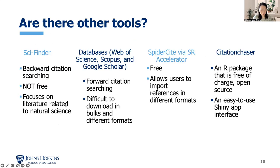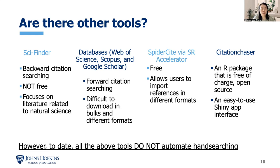The next question you may ask is: are there other tools we can use? The answer is yes, but they are limited. The first tool is called SignFinder, which enables backward citation searching. However, it is not free and it focuses on natural science literature. Databases such as Web of Science, Scopus, and Google Scholar are difficult to download in bulk and in different formats. SpiderCite and CitationChaser are free with better features. However, to date, none of the above tools automate hand searching, and that is the main reason for us to develop PaperFetcher.